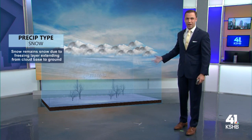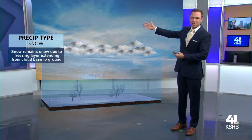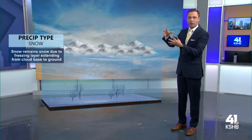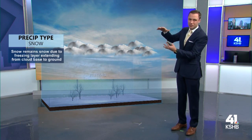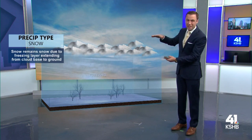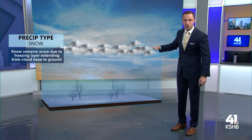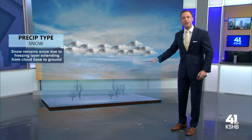It all comes down to what the temperature of the atmosphere is below the clouds. Snow is pretty simple — it's a bunch of ice crystals in the clouds, snowflakes, and since the temperature of the air below the cloud is all below freezing, it falls to the ground as snow.